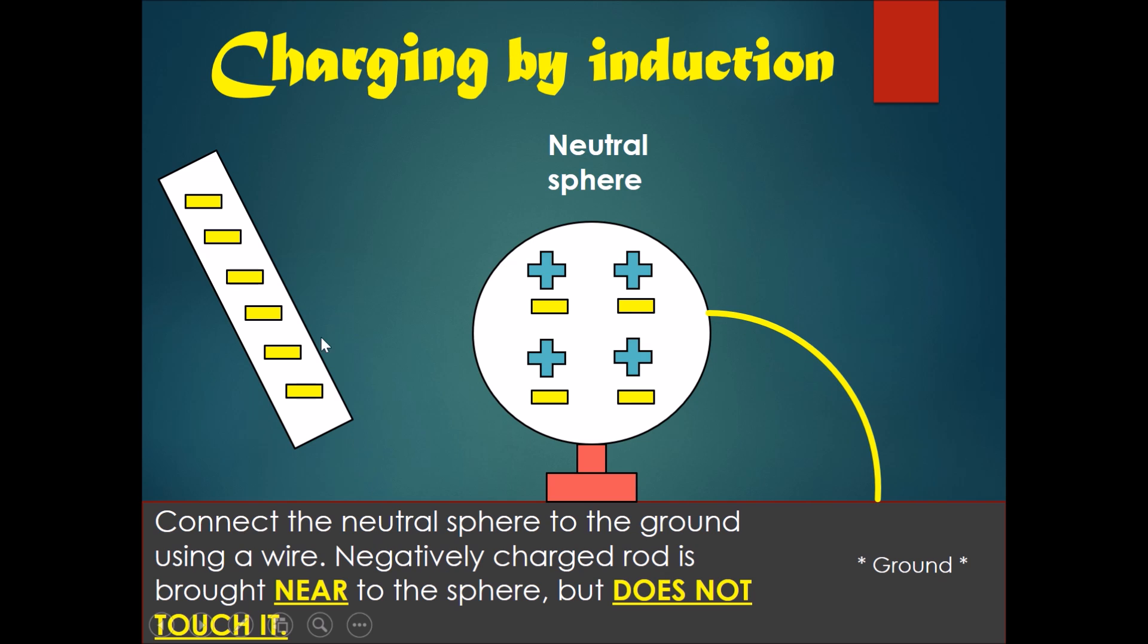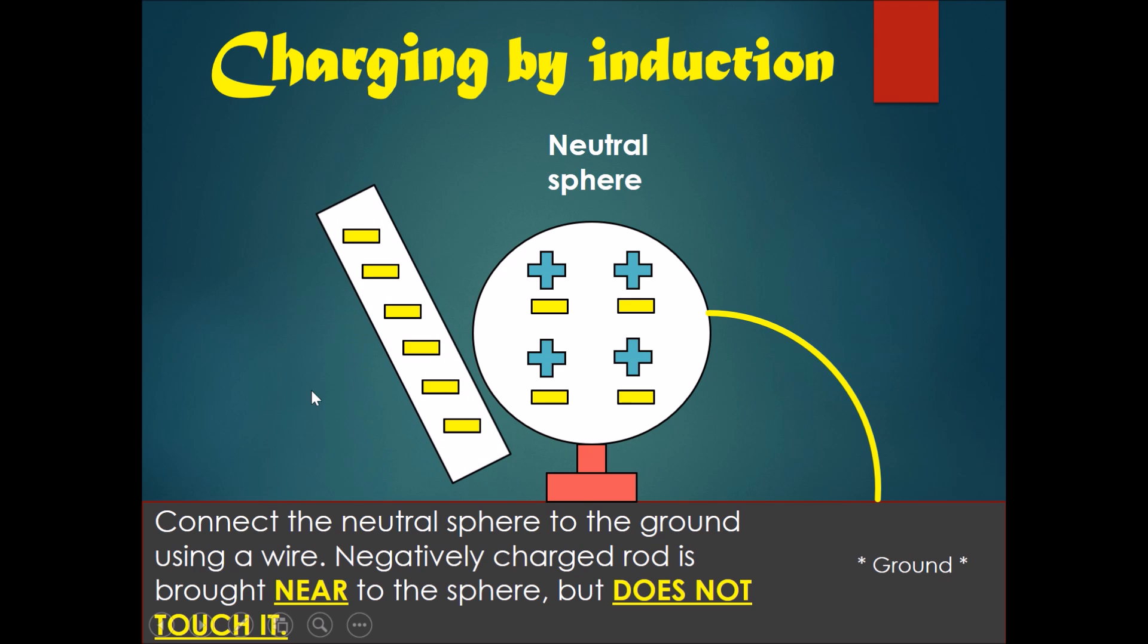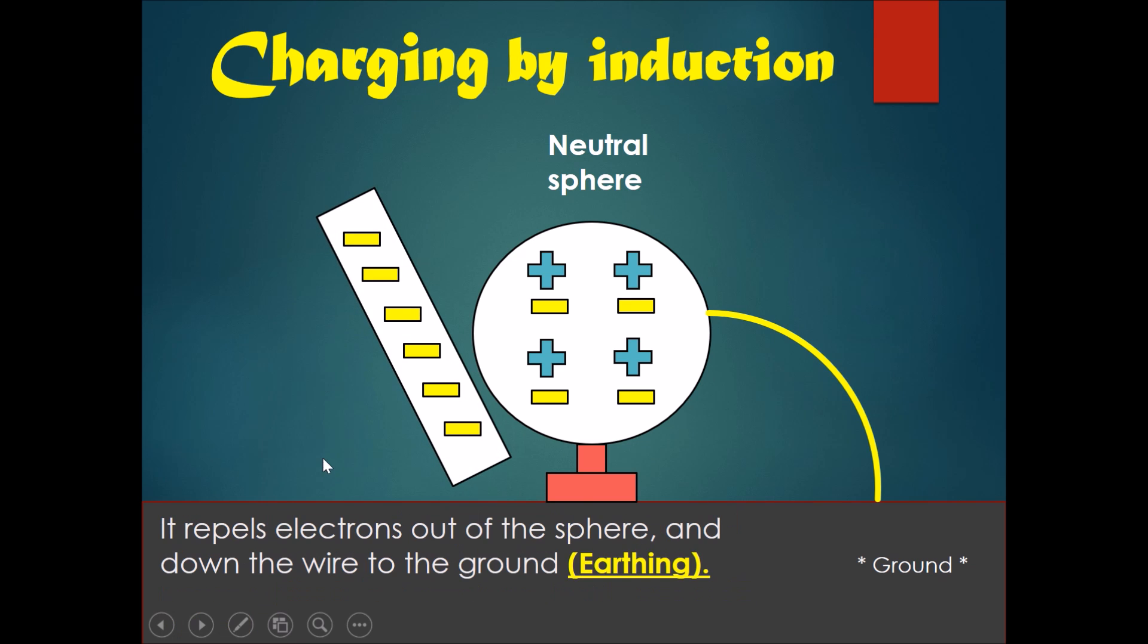Now we bring a negatively charged rod near to the sphere but do not touch it. Once we bring it near, it will repel the electrons out of the sphere and down the wire into the ground. This process is called earthing.